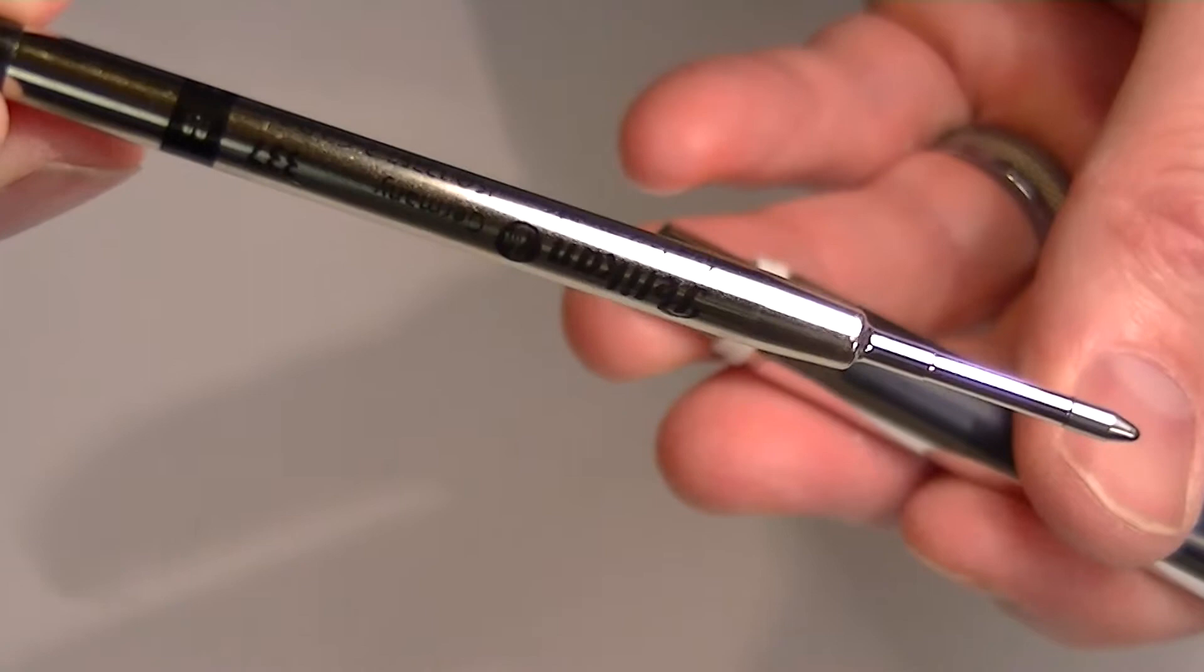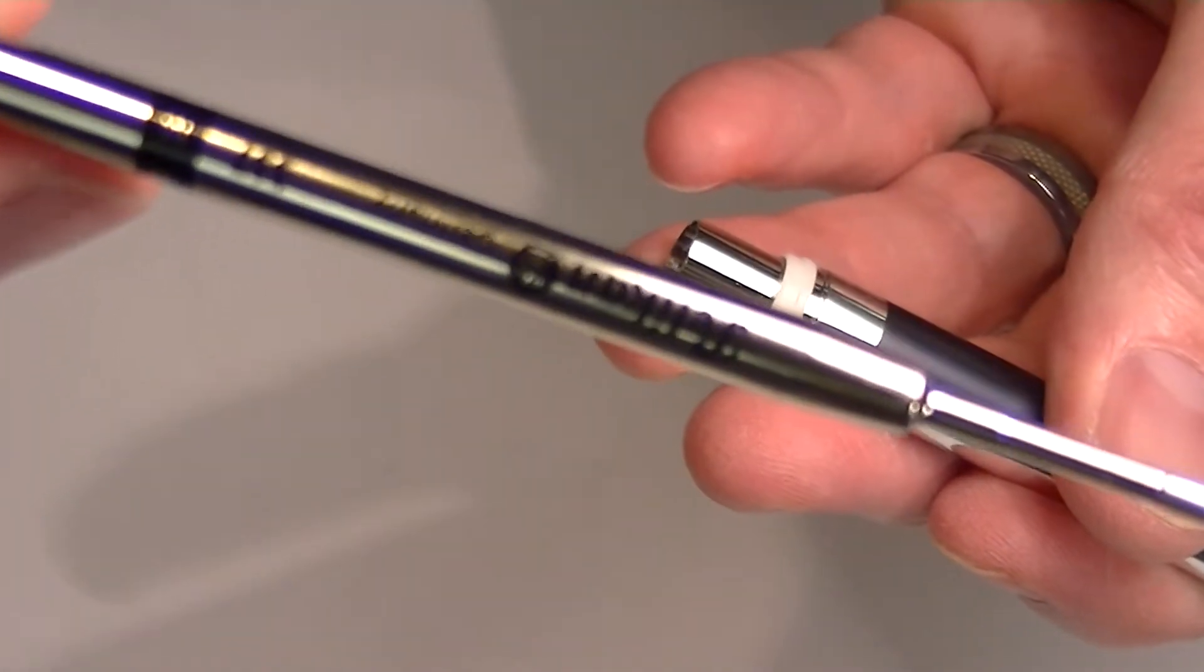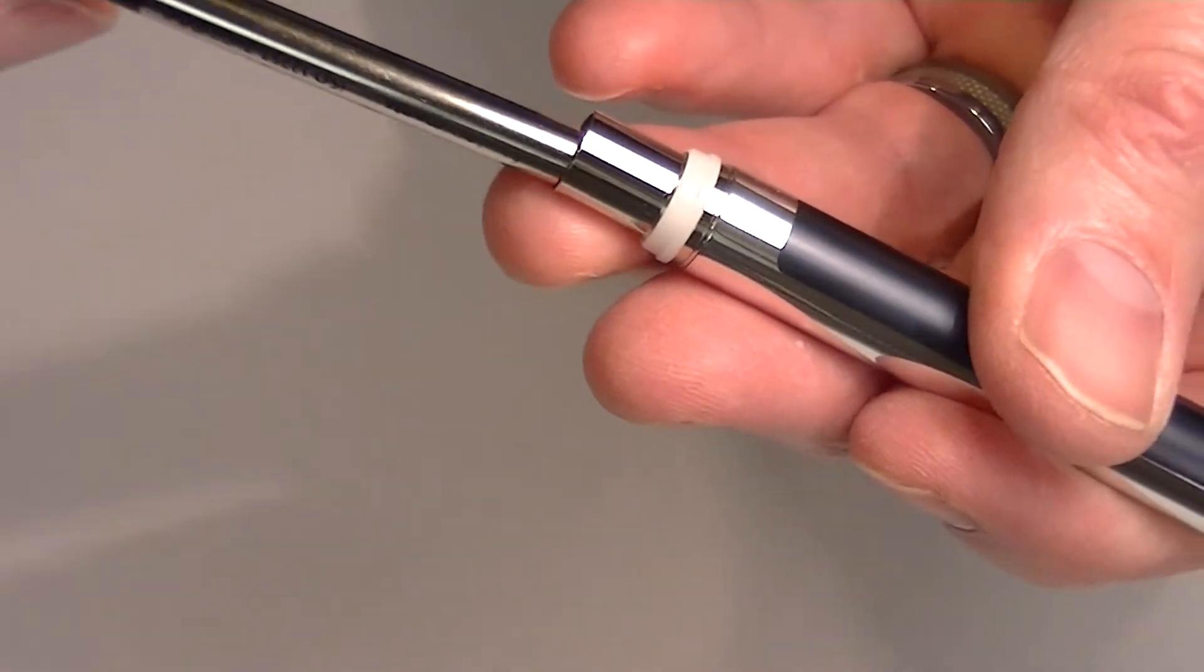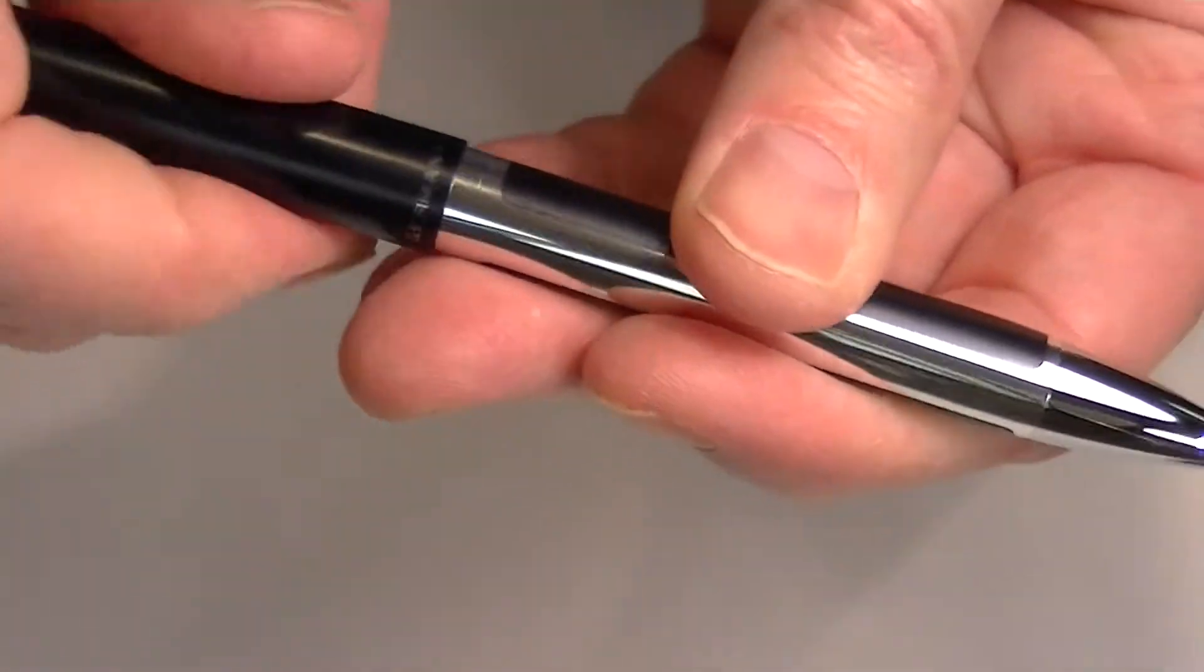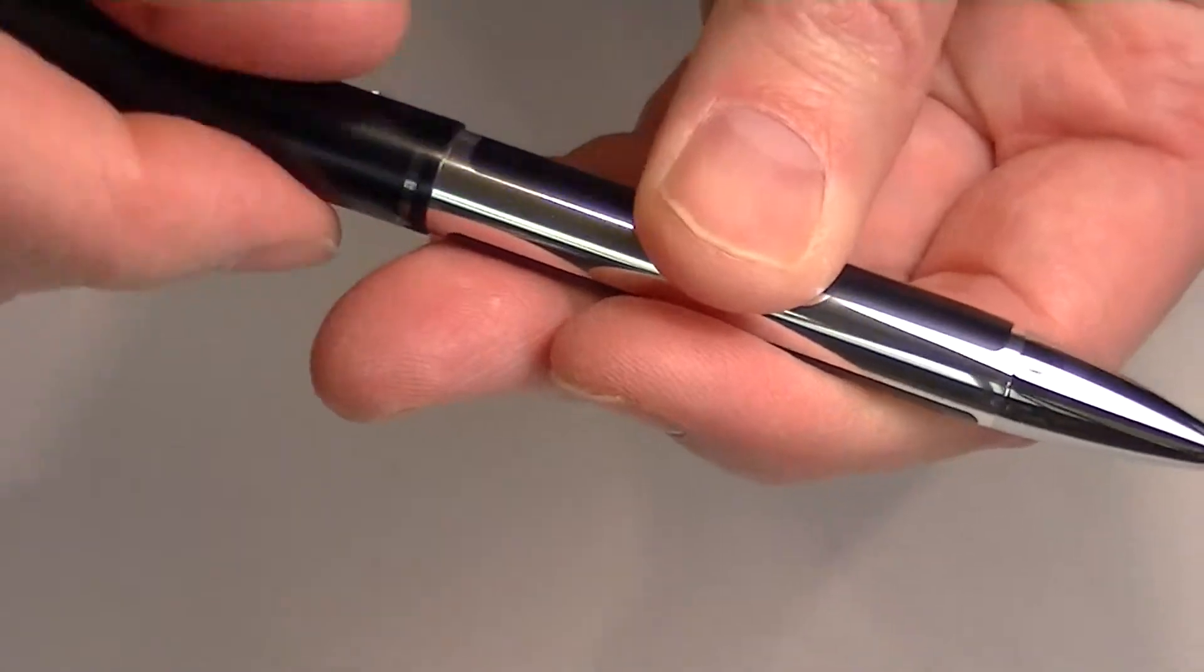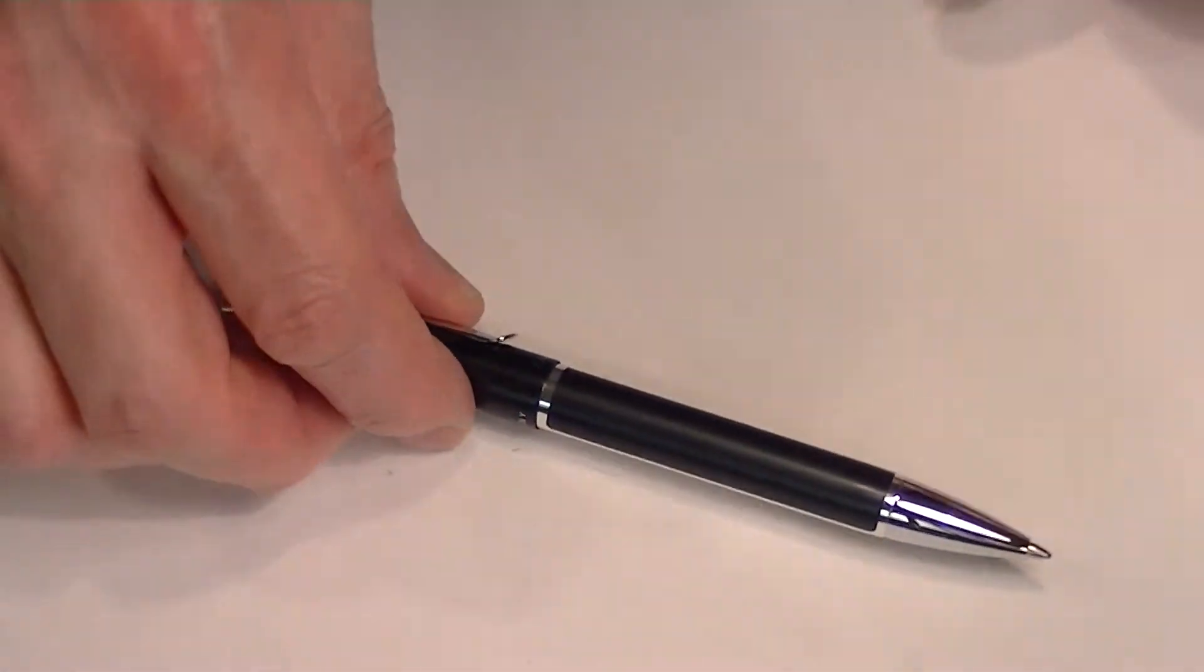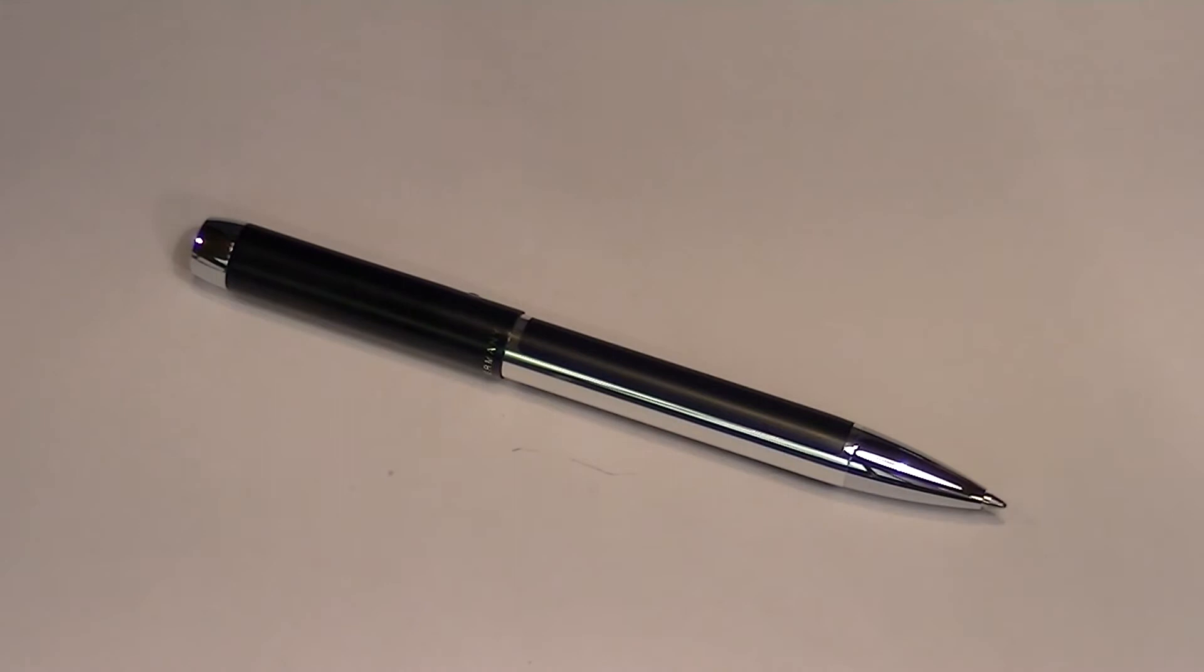It comes with a Pelican 337 ballpoint refill. Pelican is a great brand. They are a German product. It has been around for a long time. The Pelican Pura is a nice ballpoint pen.